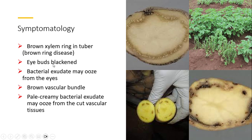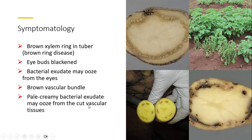Eye buds are blackened — if you see the tuber from outside, the black eye buds can be seen. Bacterial exudates may ooze from the eyes as well. There are brown vascular bundles, and pale creamy bacterial exudates may ooze from the cut vascular tissues.